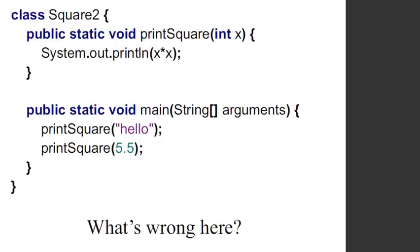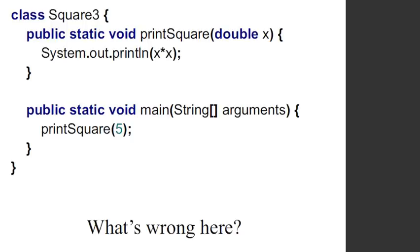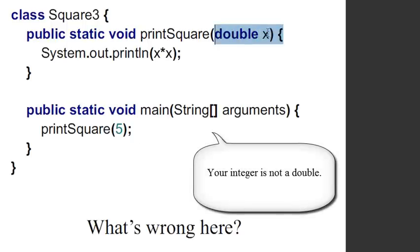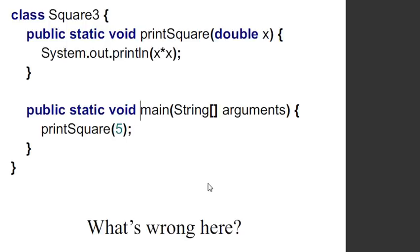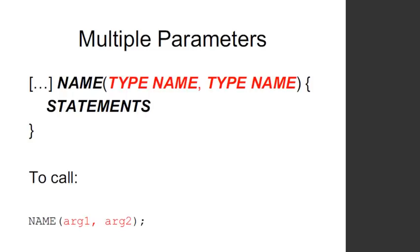Can you spot what's wrong with these programs? In the first one, I passed 'hello' — a string — into printSquare, which expects an integer, so that's an error. In the next one, I declared the parameter as a double and tried to stick in an integer — that's also not correct. You've got to get that strict typing done, because in Java, unlike PHP, you're not going to get away with mismatched types.